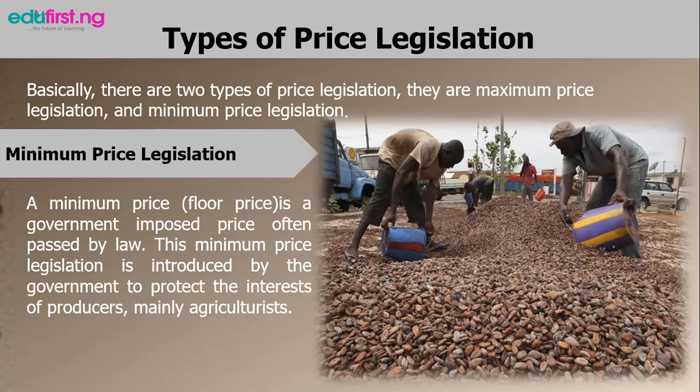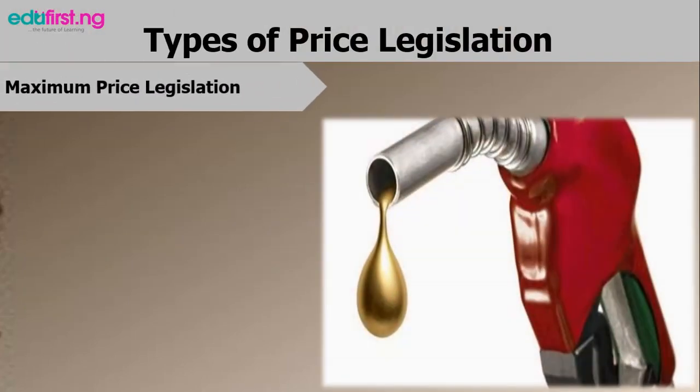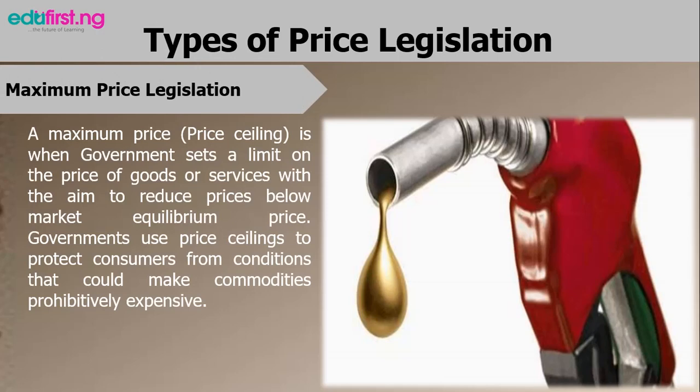The second type of price legislation is the maximum price legislation. A maximum price, otherwise known as a price ceiling, is when the government sets a limit on the prices of goods or services, with the aim to reduce prices below the market equilibrium price. Governments use price ceilings to protect consumers from conditions that could make commodities prohibitively expensive. To protect consumers, the government imposes a maximum price above which no one is allowed to sell the commodity. For example, with petroleum products, the government fixes a particular price above which no dealer is allowed to sell.